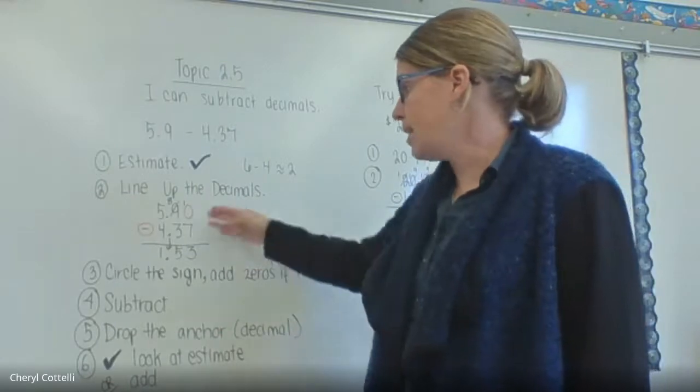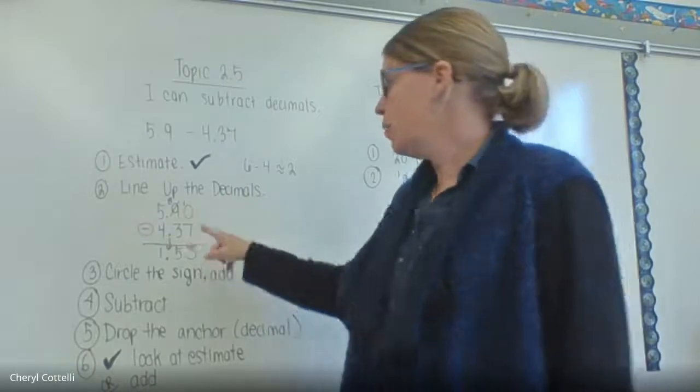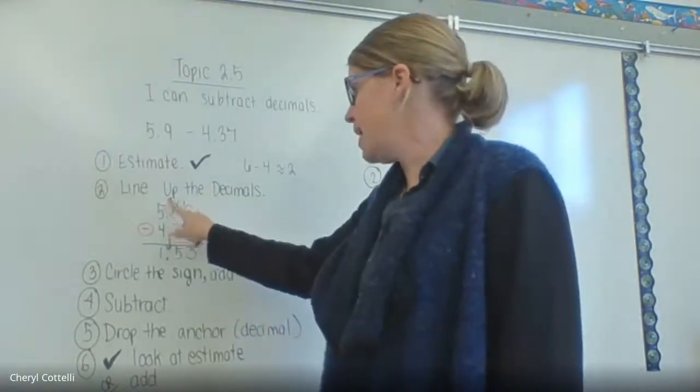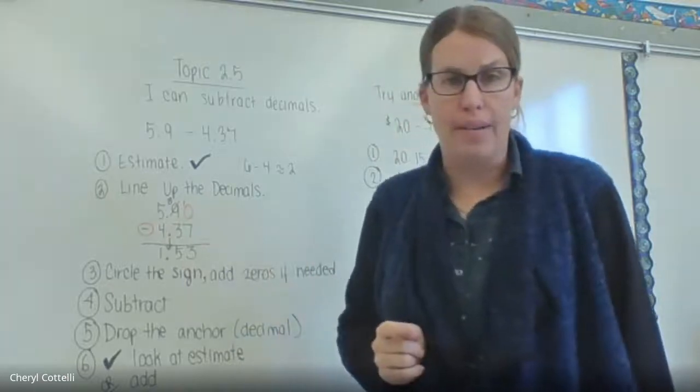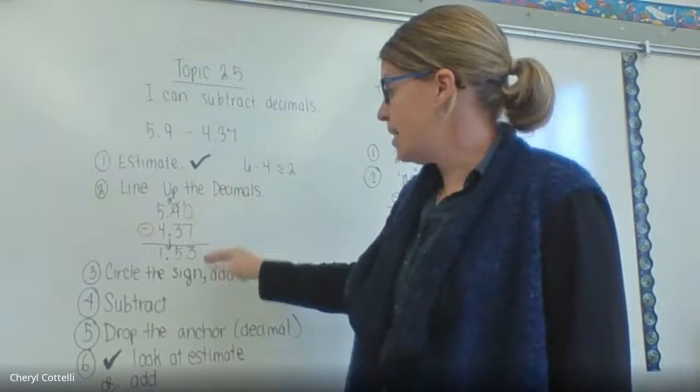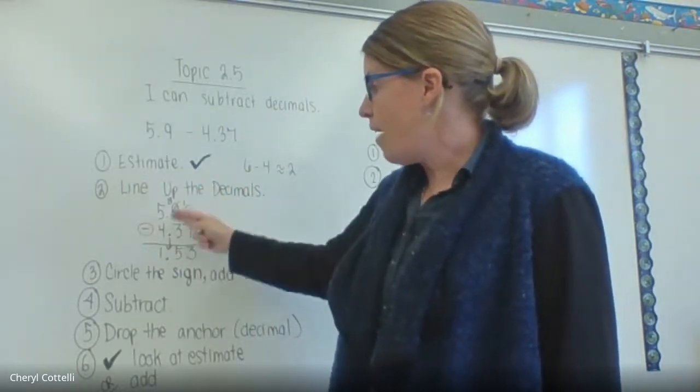Step four is we're going to subtract. We actually can't take 7 from 0, so we're going to have to borrow. We borrow from the 9, that becomes an 8, and then we give that 1 to the 0. So now we can subtract. Now it's 10 minus 7, which is 3. 8 minus 3 is 5. 5 minus 4 is 1.